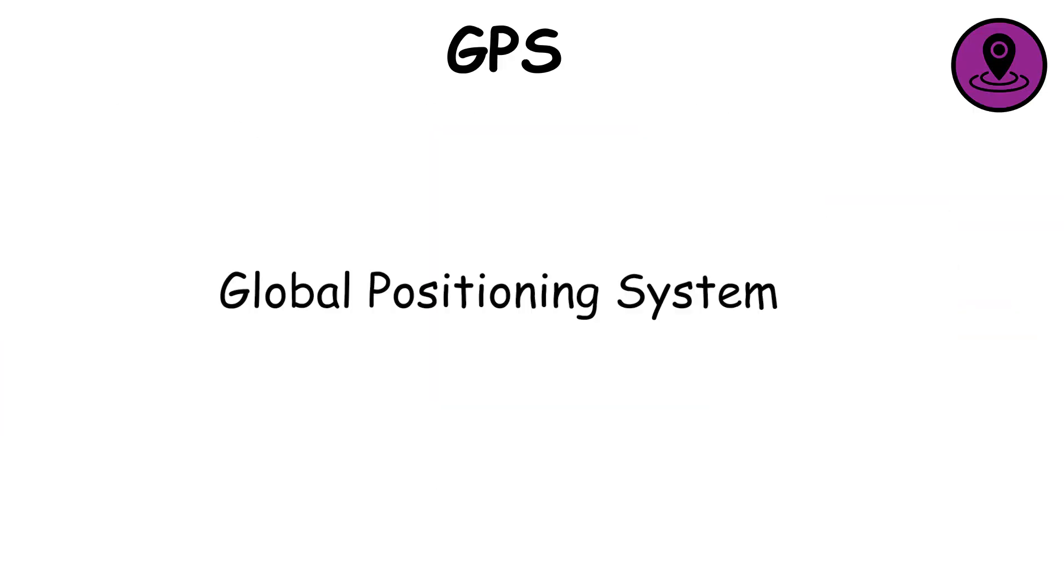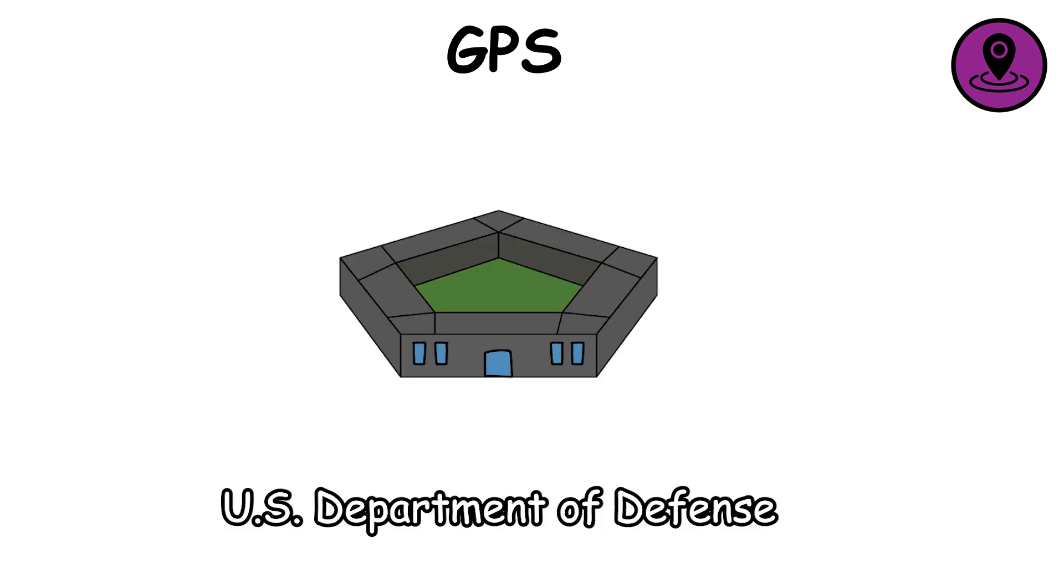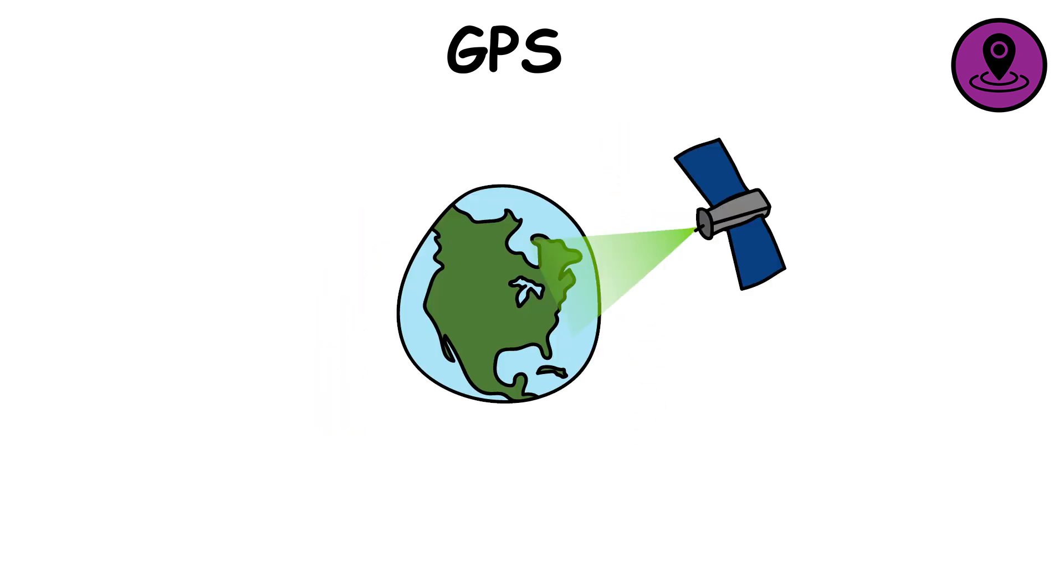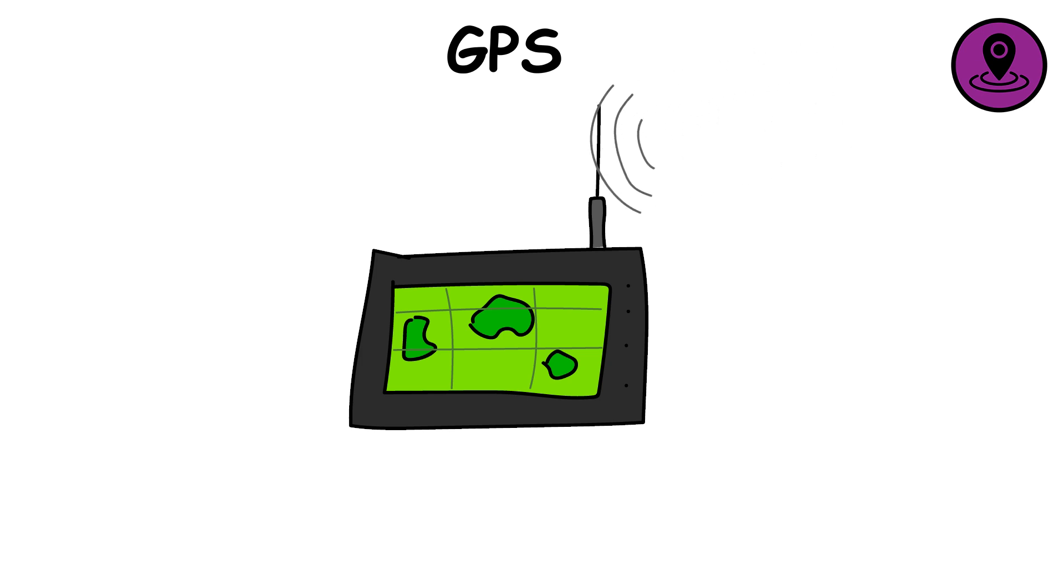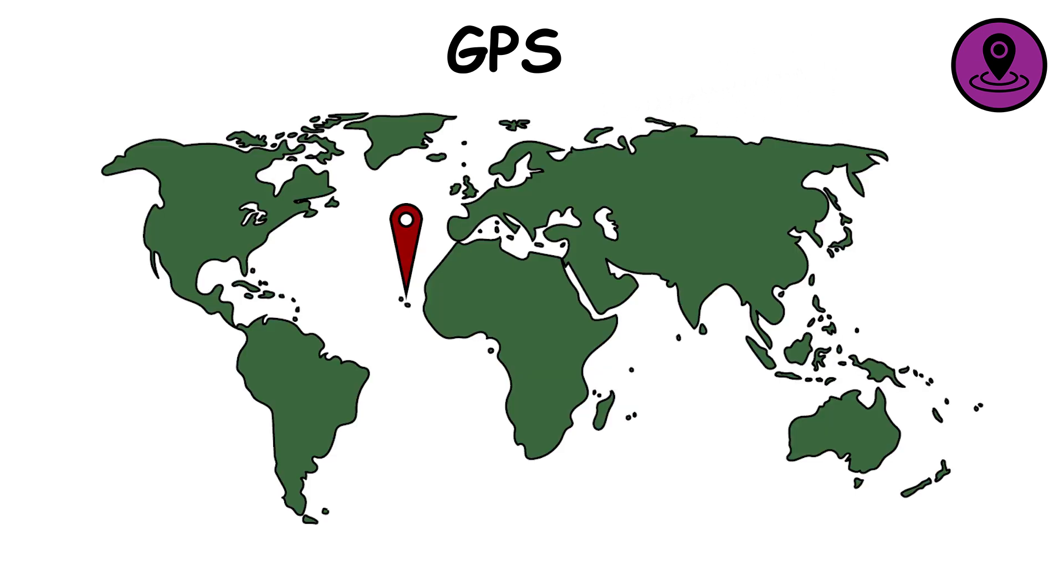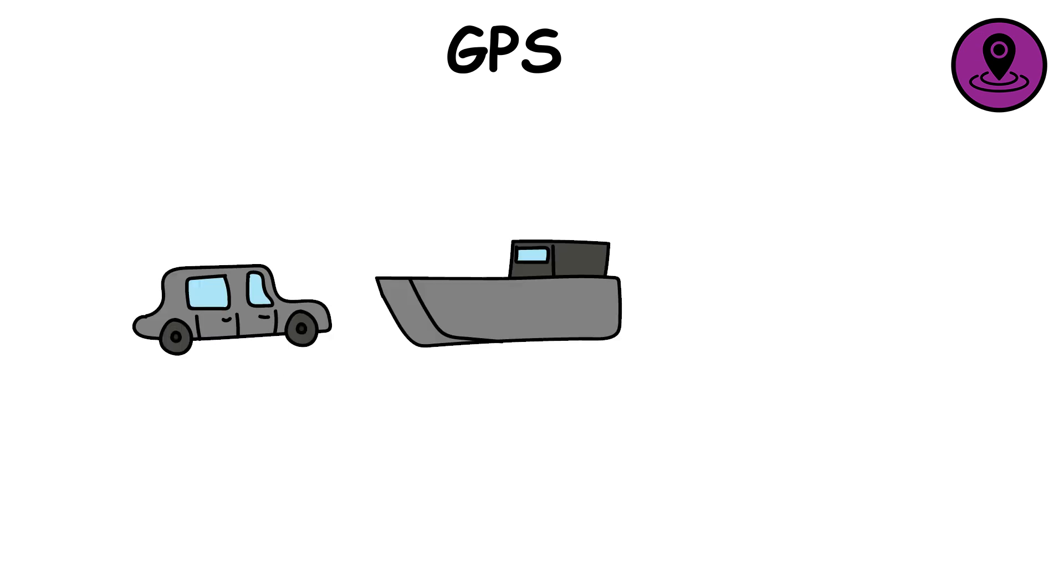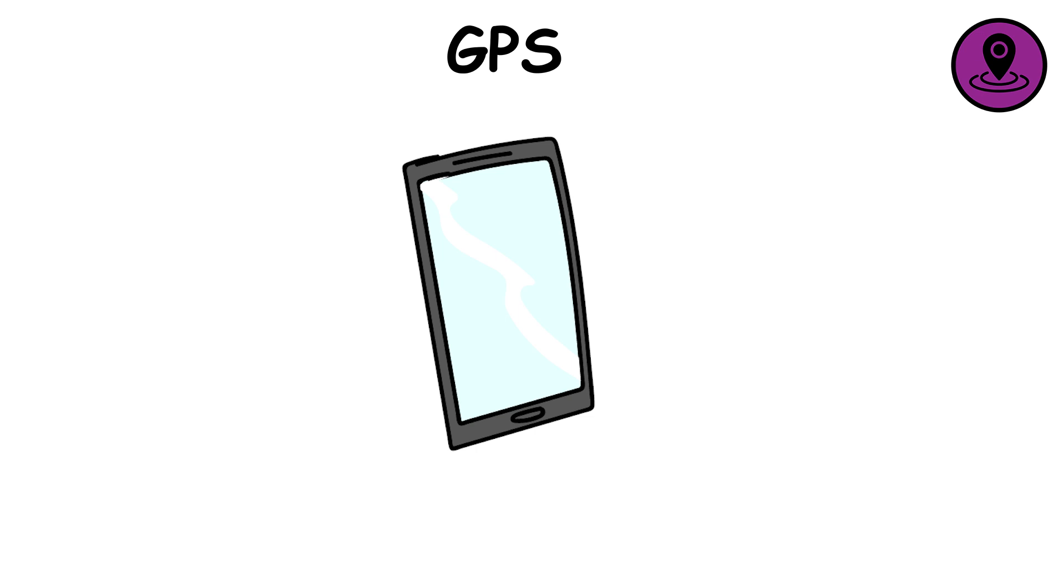GPS. The Global Positioning System, or GPS, was developed by the U.S. Department of Defense in the 1970s to provide precise location data for military navigation. It works through a network of satellites orbiting Earth, which send timed signals that receivers use to calculate exact positions anywhere on the planet. In the 1980s, GPS was opened for civilian use, leading to its adoption in cars, ships, airplanes, and eventually smartphones.